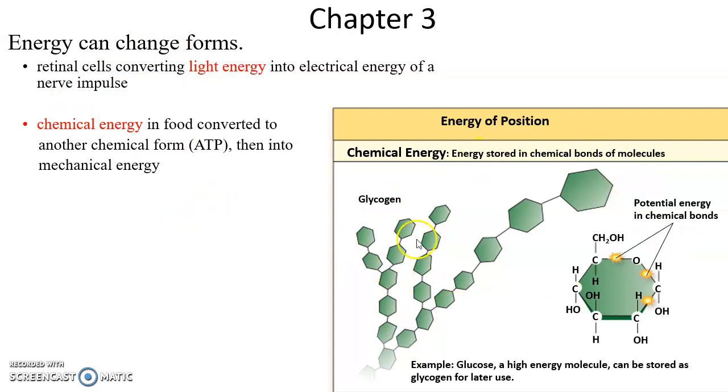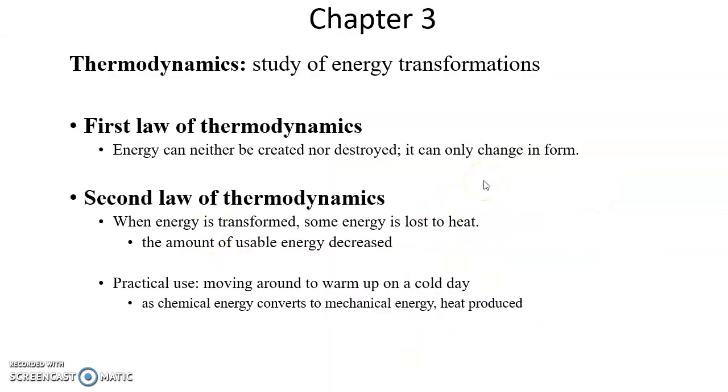For instance, glycogen—long chains of glucose. When you break the chemical bonds and form the individual glucose molecules, that's a way of forming energy. Then, of course, using glucose, breaking it down, can lead to even more energy being produced in the form of ATP. Thermodynamics is the study of those energy transformations. First law of thermodynamics: energy can neither be created nor destroyed, can only change form.